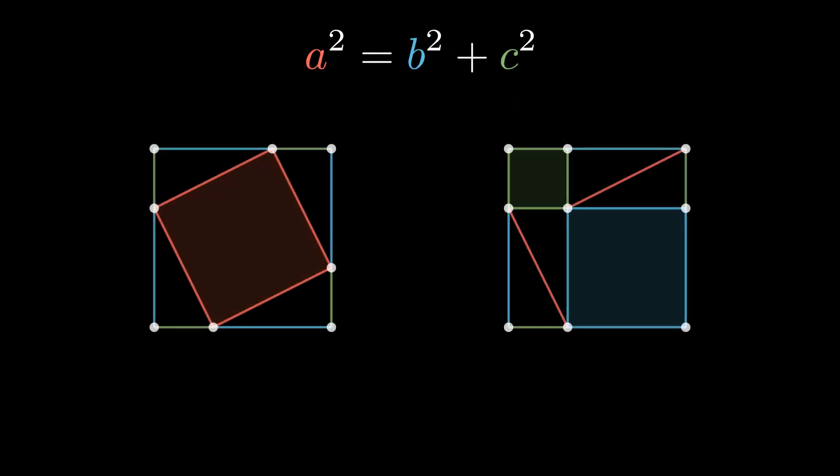It should be clear that if we add the areas of the two squares on the right, we will get the area of the larger square on the left. And what are these areas? None other than a squared, b squared, and c squared.